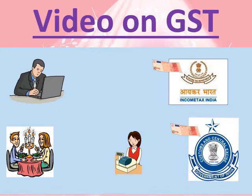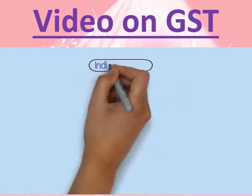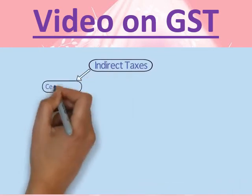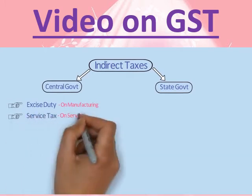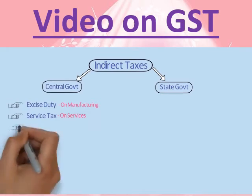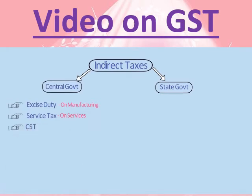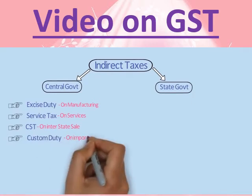In our country, indirect taxes are levied by both central and state government. Some major indirect taxes levied by the central government are: Excise duty, charged on goods produced or manufactured in India; Service tax, charged on provision of services; Central Sales Tax (CST), charged on interstate sale of goods — that is when goods are sold from one state to another; and Custom duty, levied on imports and exports of goods.